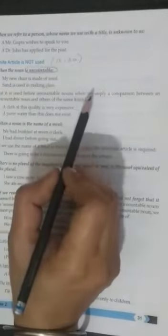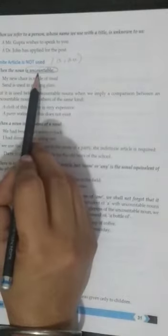In the previous page we have done countable noun. But now we are going to do uncountable noun. My chair is made of wood. This is uncountable.